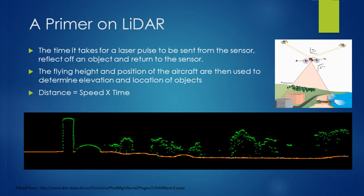We know the flying height of the aircraft from the GPS information. We know the amount of time it takes for the laser pulses to be sent from the aircraft, bounce off an object, and return back to the sensor. In its most simplistic form it's distance equals speed times time — we know the speed of light, we know where the aircraft is, we know how long it took for that pulse to return. That's how LiDAR data is basically derived.